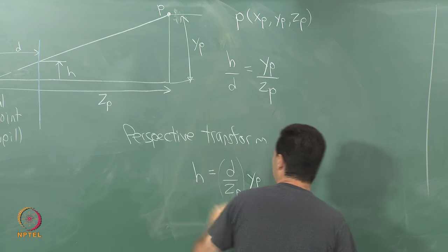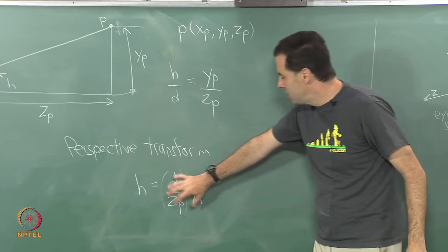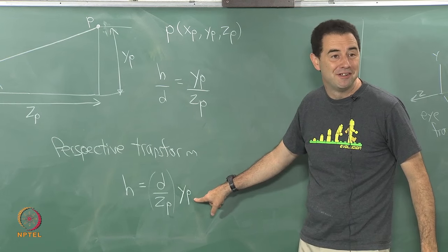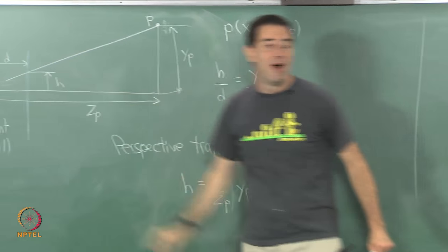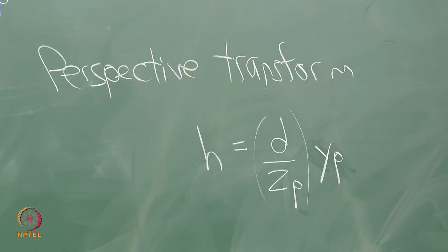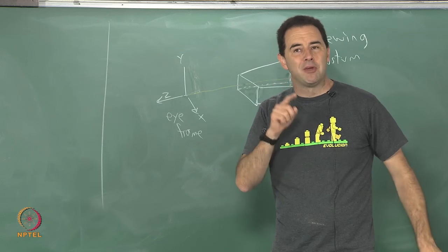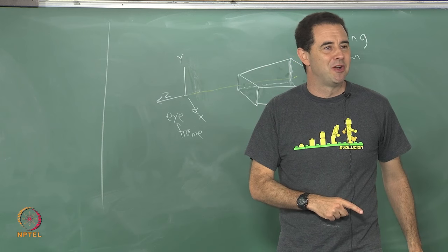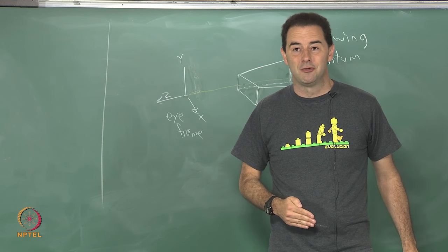It seems to be shrinking y_p by some appropriate amount due to these ratios. That is all that is going on here. I just want to do the same trick now with more dimensions and make it work inside my homogeneous transform matrices. I want to increase the dimension and make it work in homogeneous transform matrices.